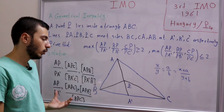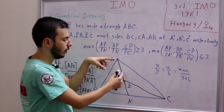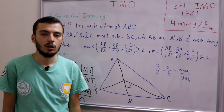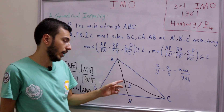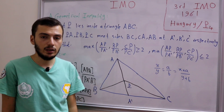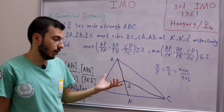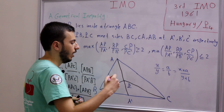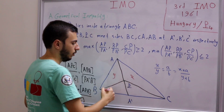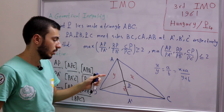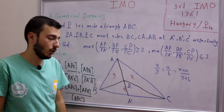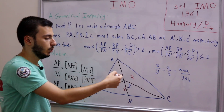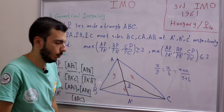Now our problem is expressed only in terms of the three sub-triangle areas formed by P inside triangle ABC. Let's call area(APB) = X, area(APC) = Y, and area(BPC) = Z. Then AP/PA' = (X+Y)/Z. Similarly, BP/PB' = (X+Z)/Y and CP/PC' = (Y+Z)/X. Now we can forget it's a geometry problem and treat it as a pure algebraic inequality.